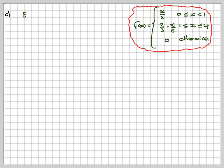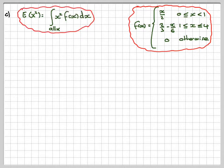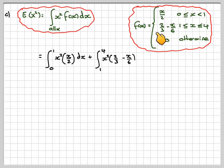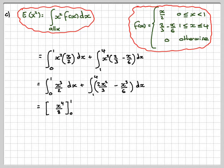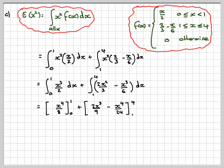Now to find E of x squared. E of x squared is the integral of x squared times f of x dx over all x. So we integrate x squared times the first part from 0 to 1, and x squared times (2 thirds minus x over 6) from 1 to 4. Expanding: integral of x cubed over 2 dx from 0 to 1, plus integral from 1 to 4 of 2x squared over 3 minus x cubed over 6 dx. Integrating: x to the 4 over 8 from 0 to 1, plus 2x cubed over 9 minus x to the 4 over 24 from 1 to 4.